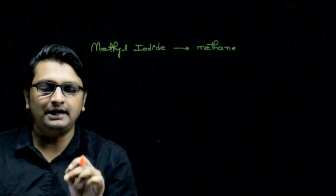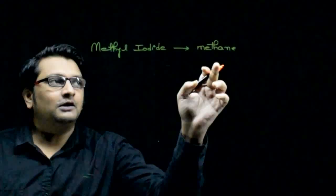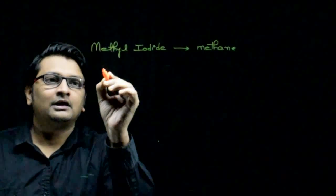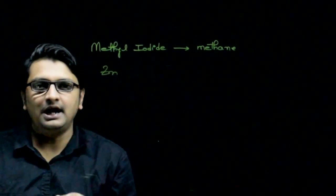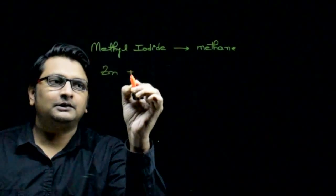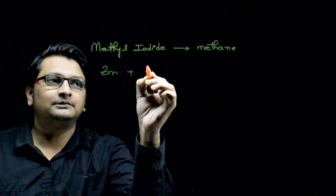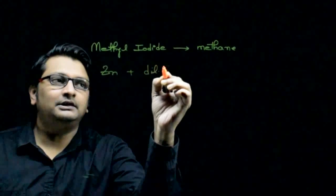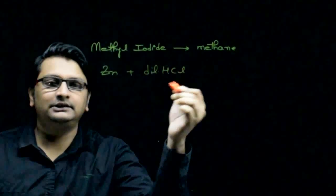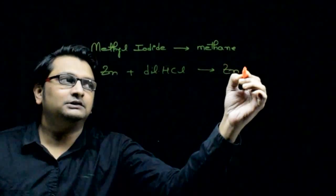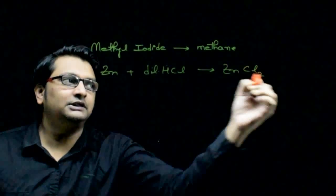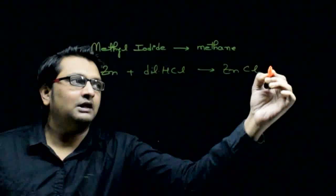So first of all, how is nascent hydrogen atom prepared? When powdered zinc reacts with dilute hydrochloric acid or sulfuric acid, it forms zinc salt. Here zinc chloride salt is formed along with nascent hydrogen atom.